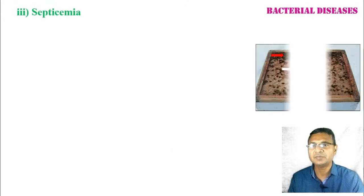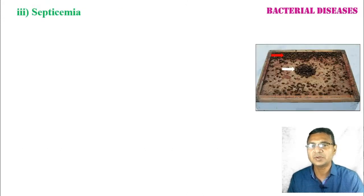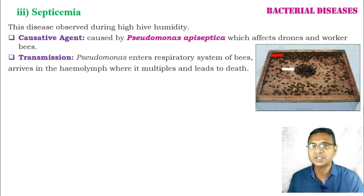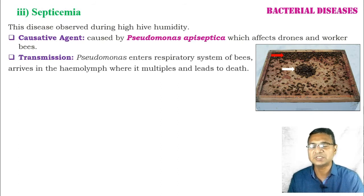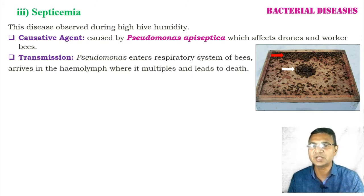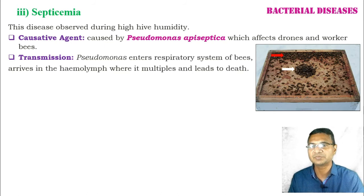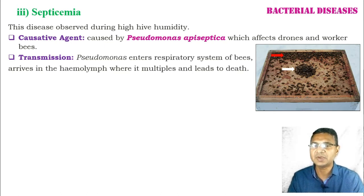After European Foulbrood, we move to septicemia, whose causative agent is Pseudomonas apiseptica. This bacterium infects adult bees — drones, worker bees, and even the queen. Pseudomonas enters the respiratory system of the bees, then enters the hemolymph where it multiplies and leads to death.